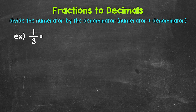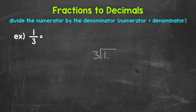So for 1 third, we can set this up as 1 divided by 3. Then we go through the division process. How many whole groups of 3 are in 1? Well, we can't do that. So we need a decimal and a 0 in order to work through this problem.